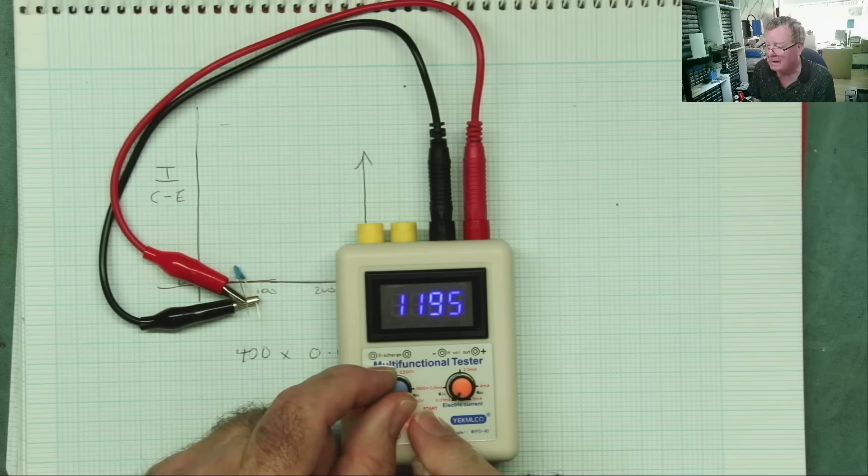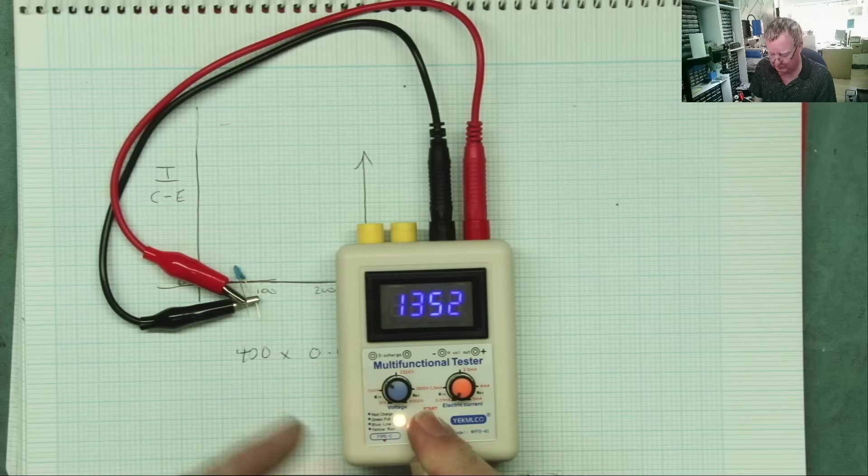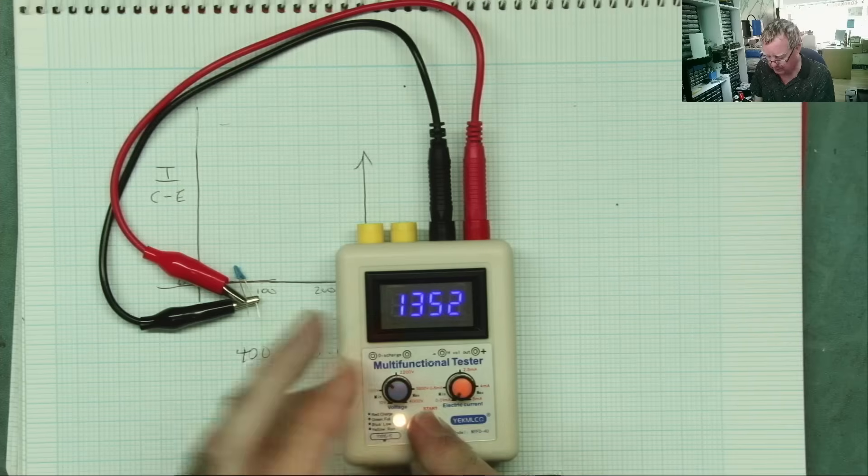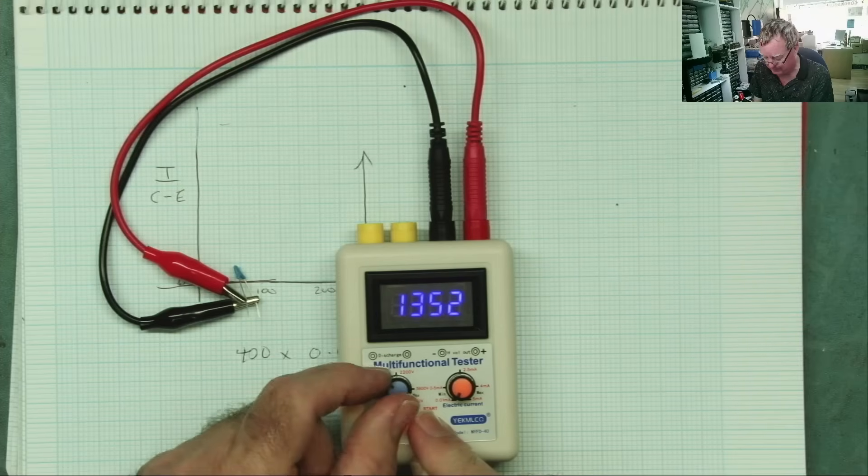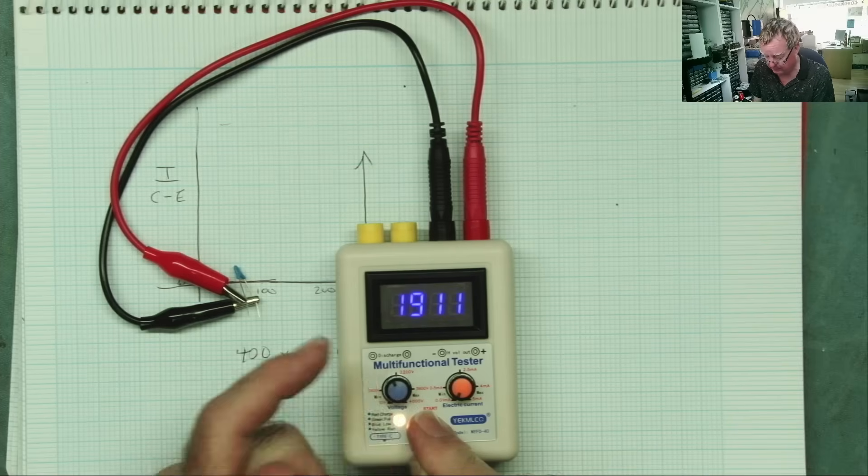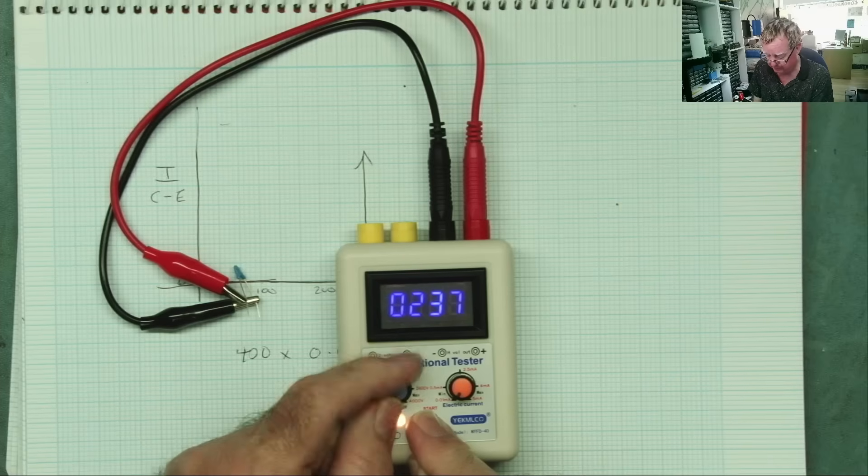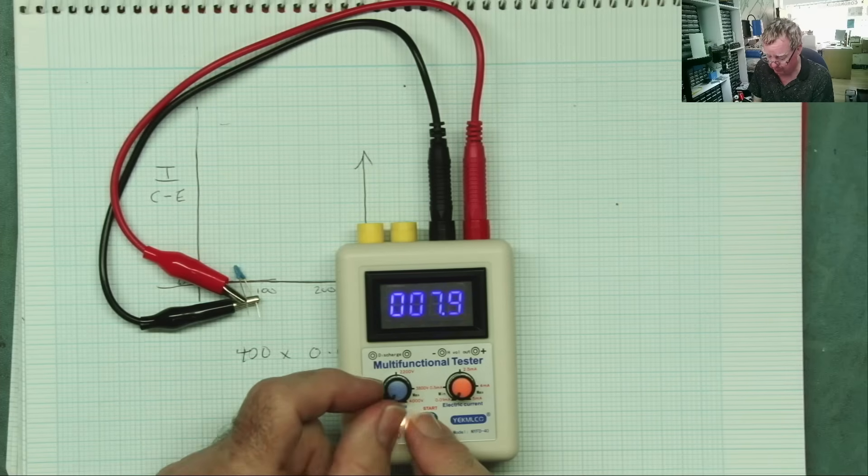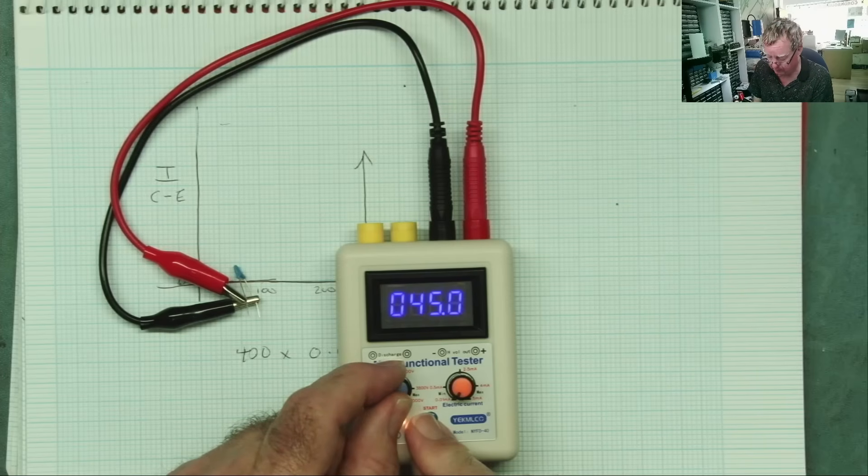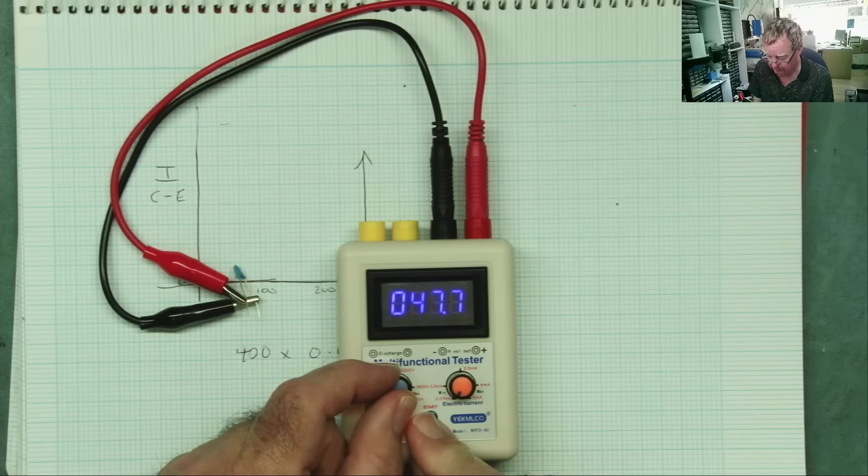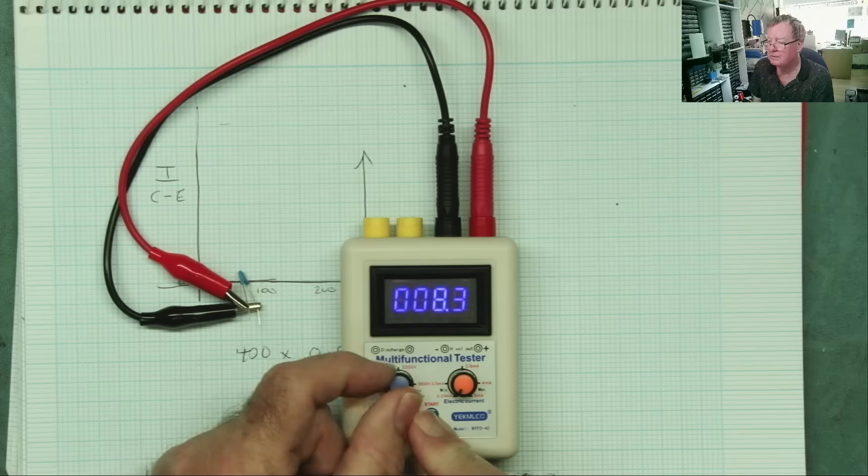But notice now that as I keep turning this up, it doesn't go into like breakdown like the transistor does. It keeps increasing. And what will happen is at some point, at 2,000, this capacitor's going to fail. There. It's failed, you see. It's gone to 237. Once I've done that, it won't work anymore. Yeah, you see. It'll just fail.